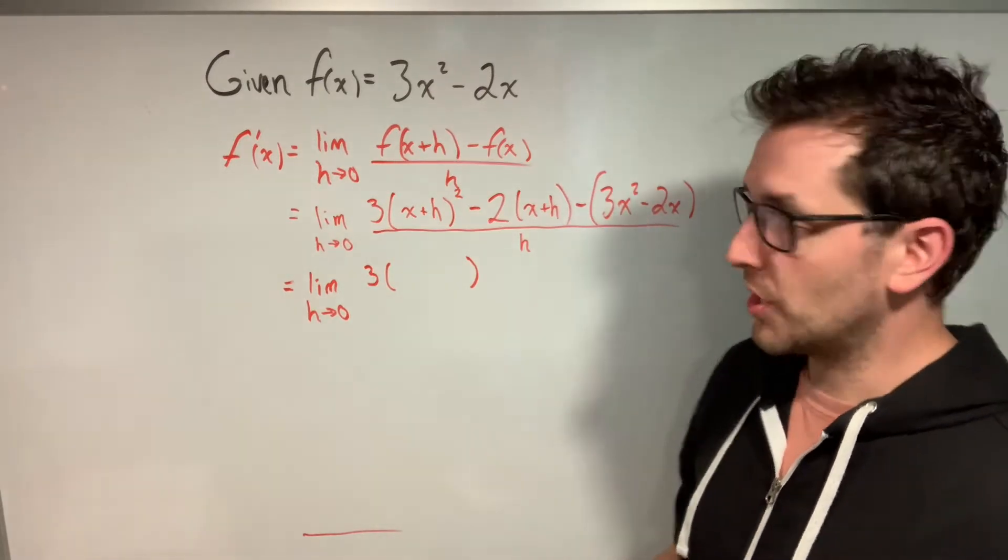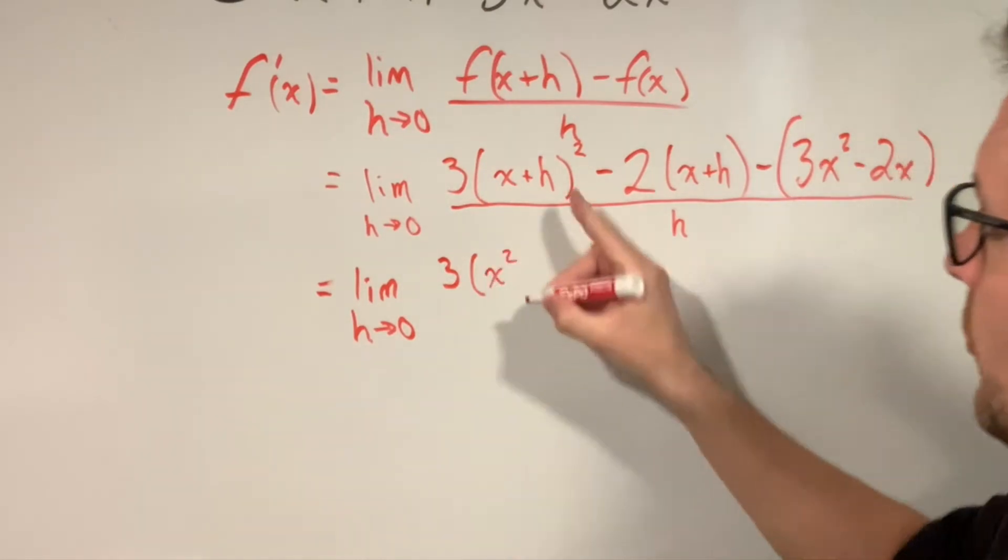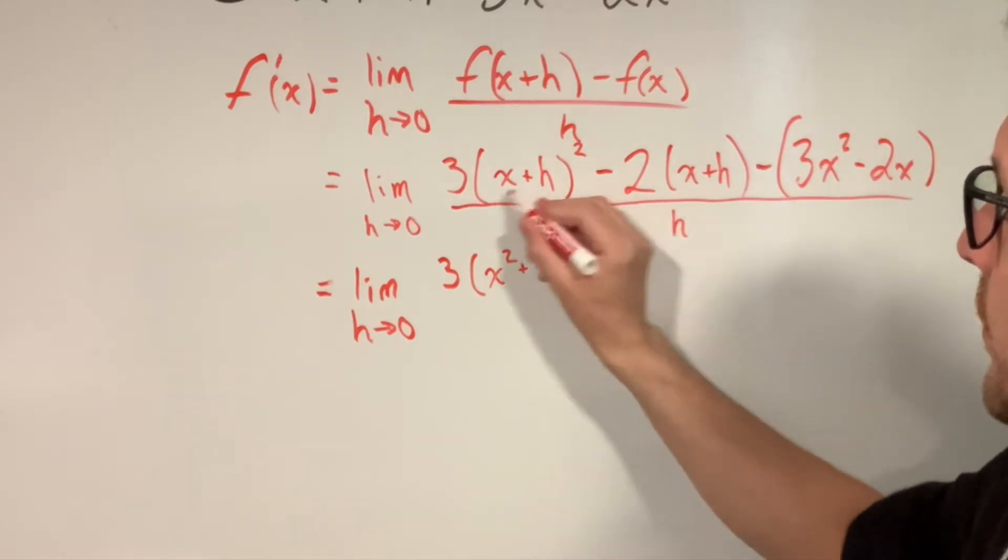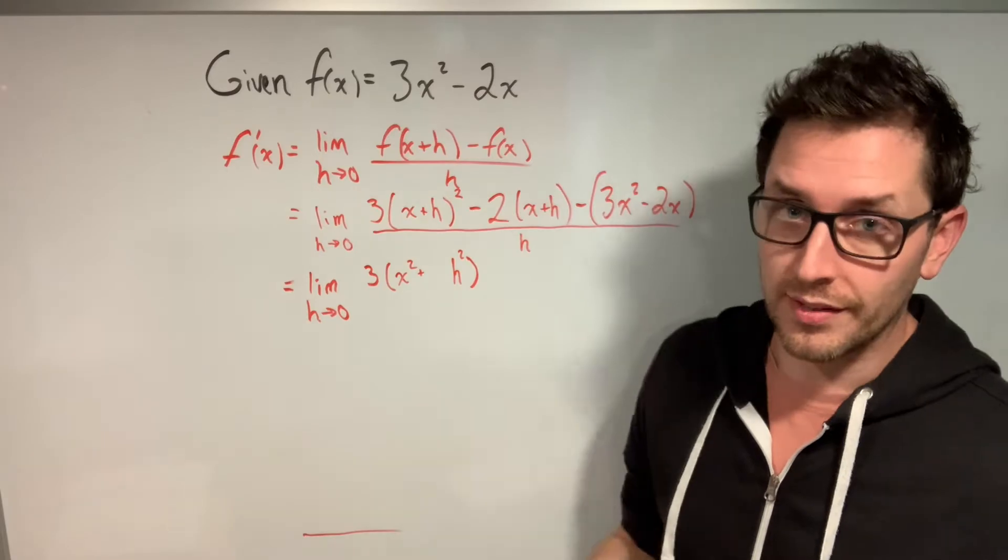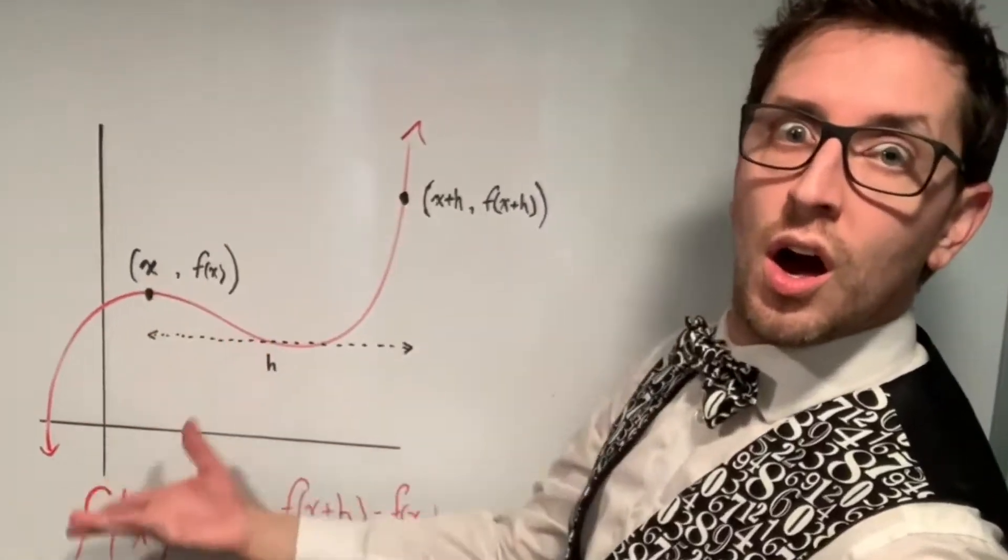Now there's a fun memory trick that I use that tells me to square the first term, which would be x², square the last term, which would be h². And then I'm going to double the product of those two, which would be x times h, I'm going to double that, which would be 2xh. And I'm going to put that in the middle: square the first, square the last, double the product, math's a blast.